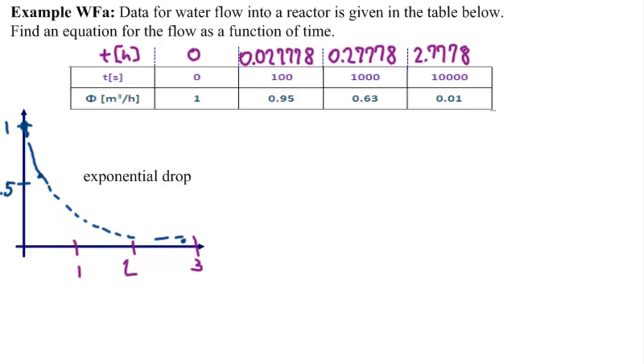So what does an exponential function look like? It looks like, if we write it with phi, phi of t equals A times E to the minus k times t. And what we need to do is find A and k from our data.